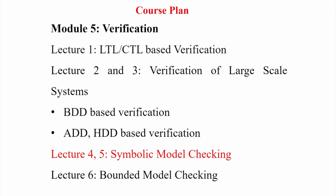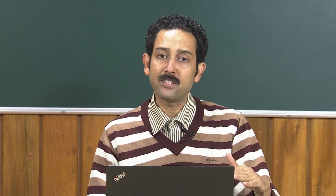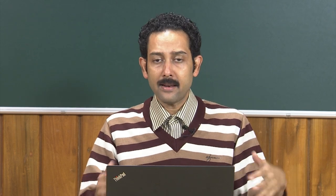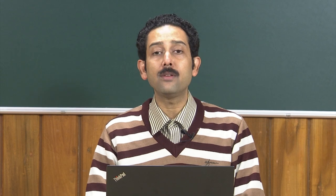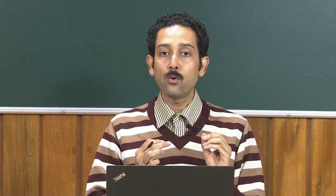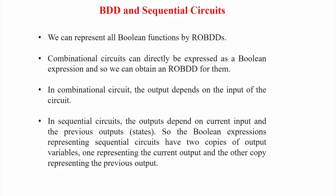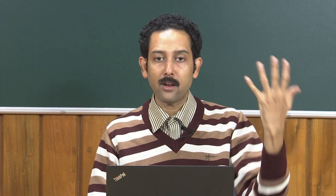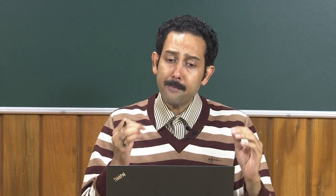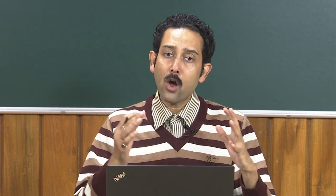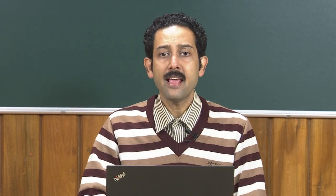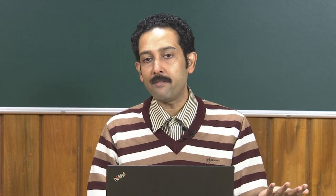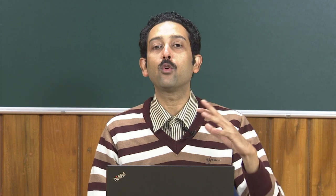If you go for Büchi automata level modeling at the state space level, the model itself is so large that labeling or model checking becomes infeasible. In this lecture series we are going to see something called symbolic model checking. We will use the concept of BDDs to model sequential circuits—because Büchi automata is essentially a finite state machine with atomic propositions labeled in the states. The main problem of CTL or LTL model checking was that Büchi automata, depending on explicit state enumeration, becomes so large that labeling is very difficult due to the size of the state space.